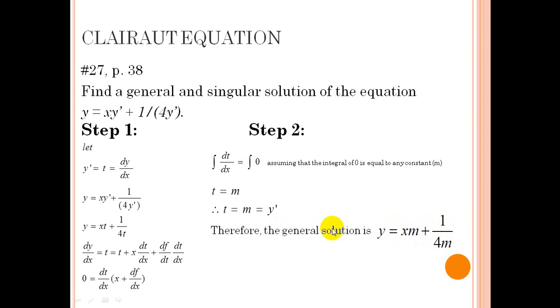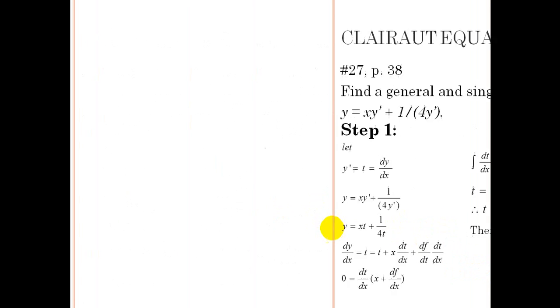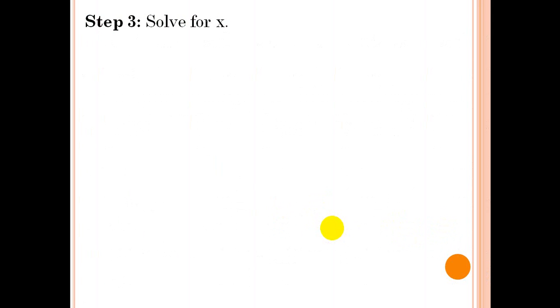Now let's go with step 3 for us to find a singular solution. So in step 3, we need to solve for x just by solving the other part of the factored equation a while ago. So in this part,